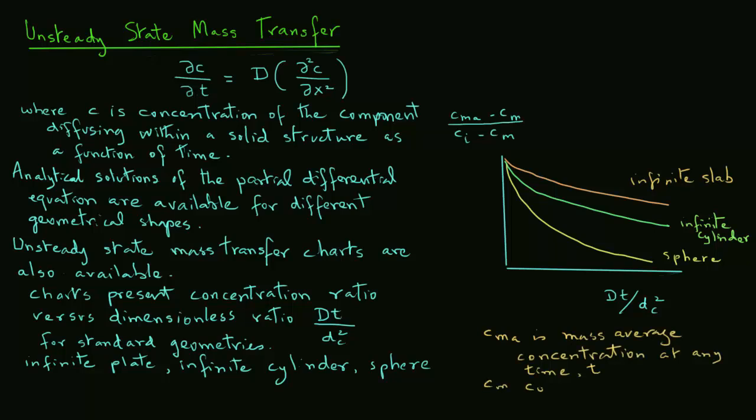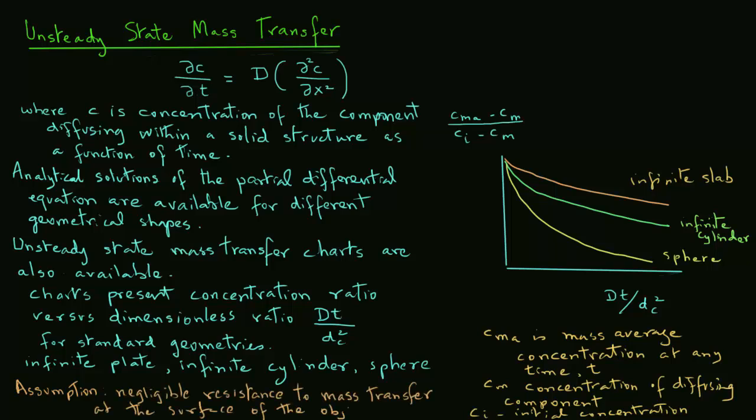CI is the initial concentration at the surface of the object. The assumption made here is that there is negligible resistance to mass transfer at the surface of the object.